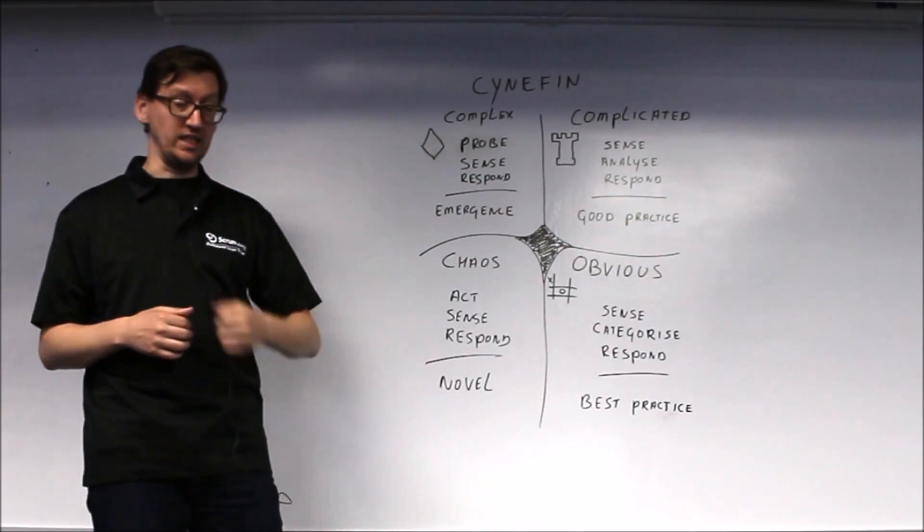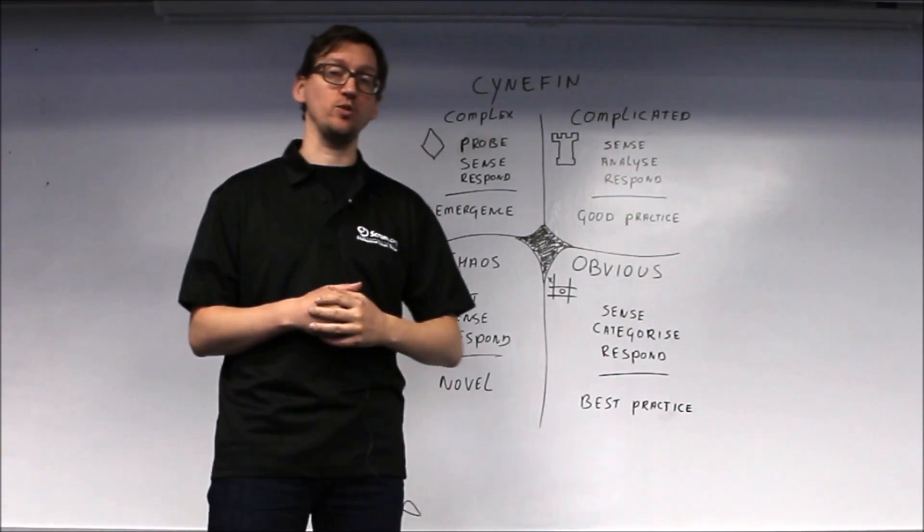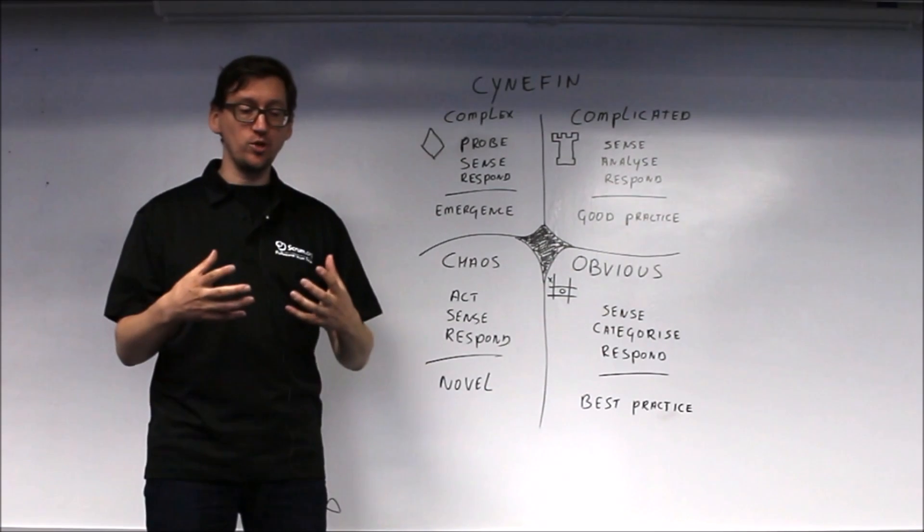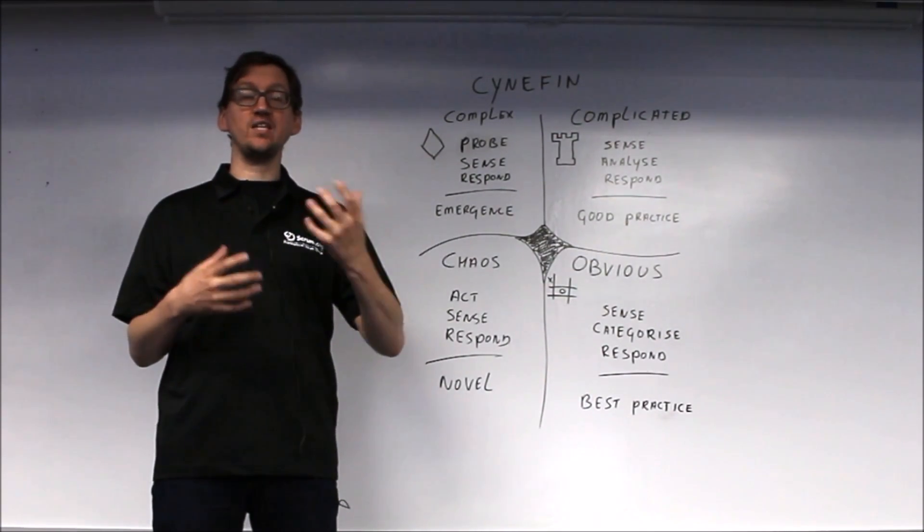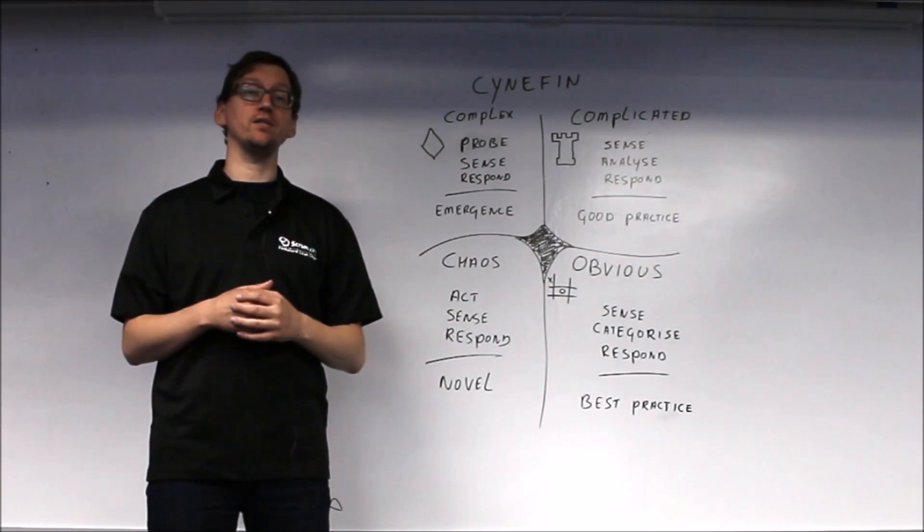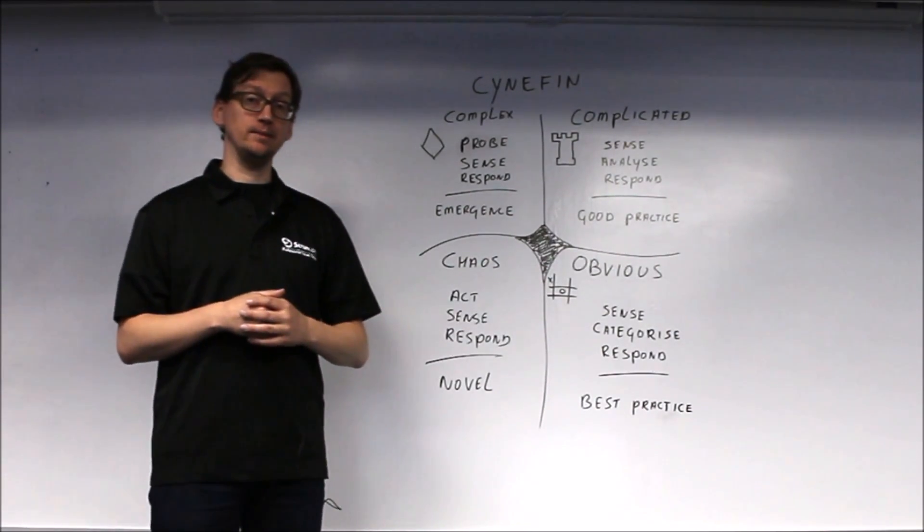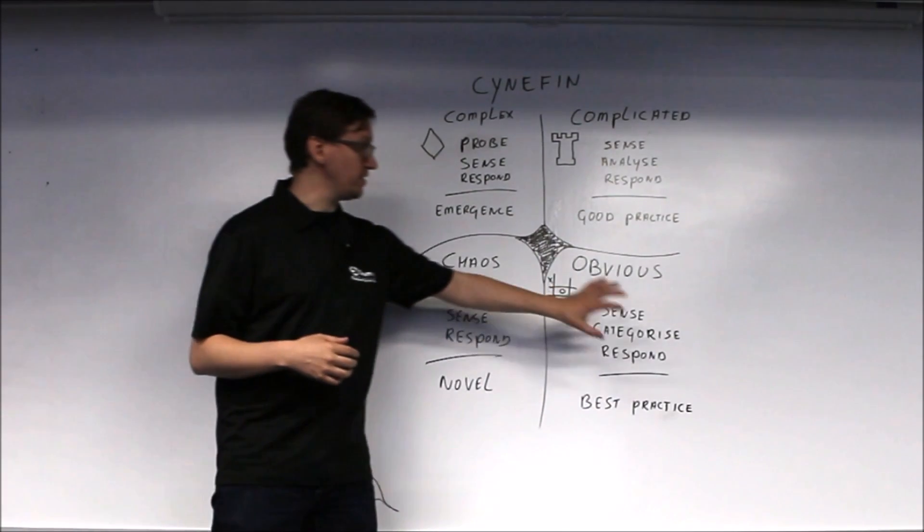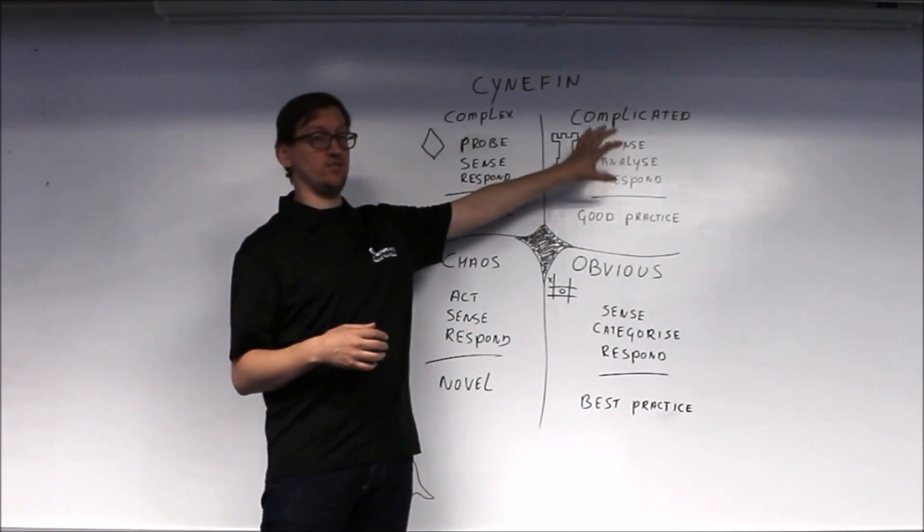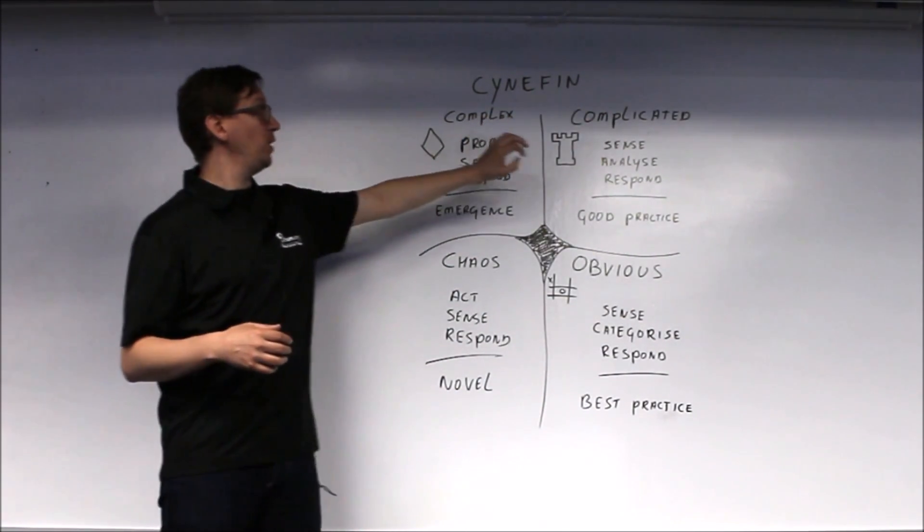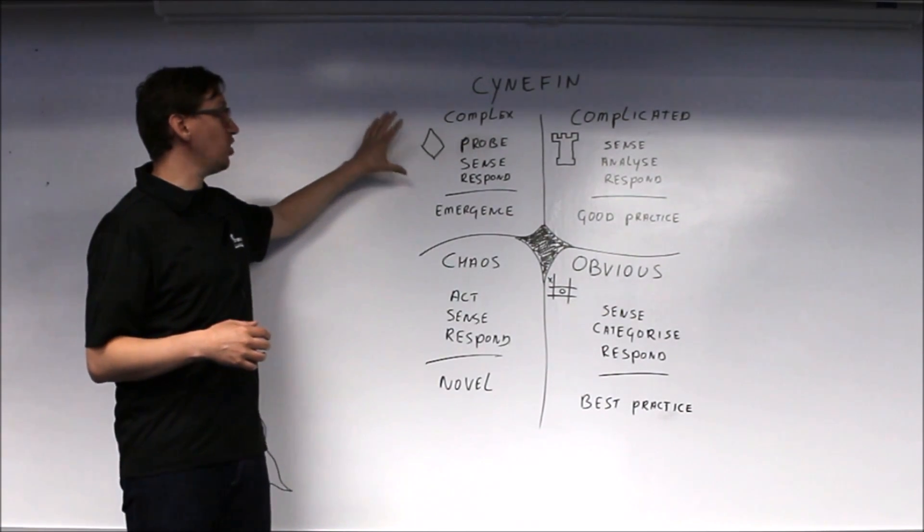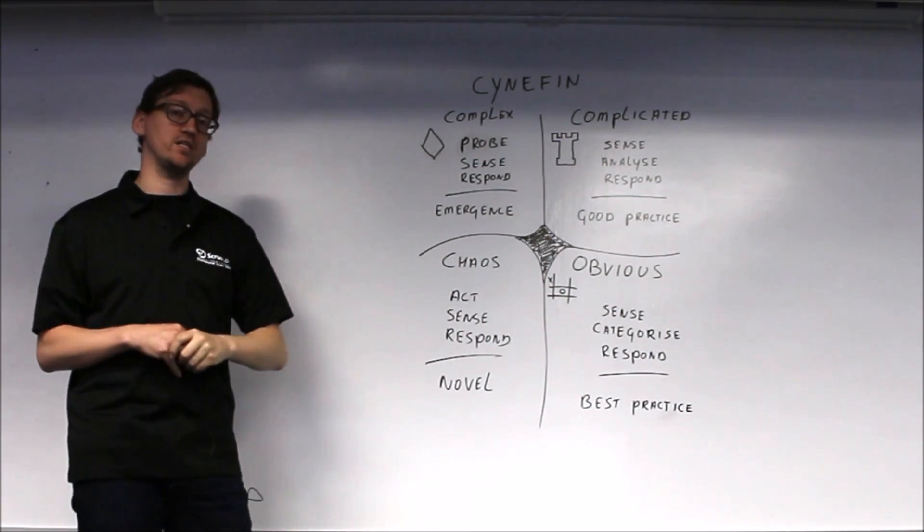It's about learning, and that's what happens in complex environments. The relationship between cause and effect is impossible to predict beforehand, but it is often obvious in hindsight. Cause and effect is obvious; cause and effect is hard to predict but predictable. Here, cause and effect is only obvious in hindsight.